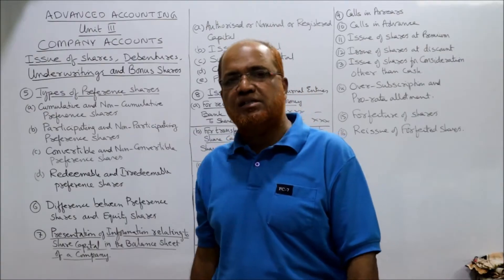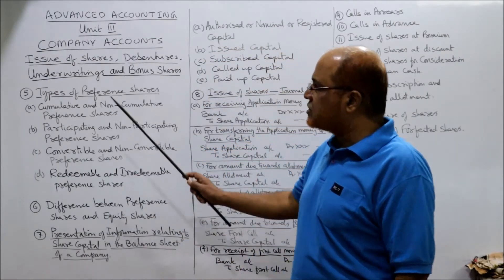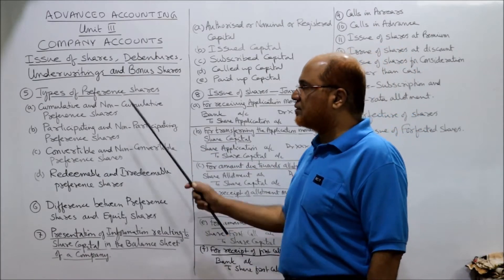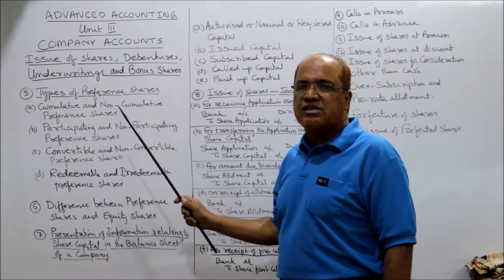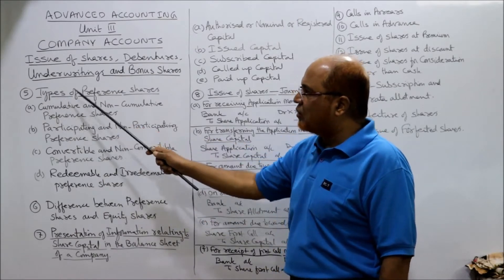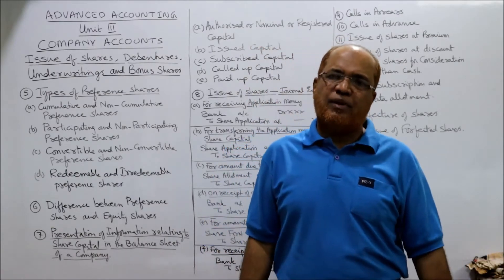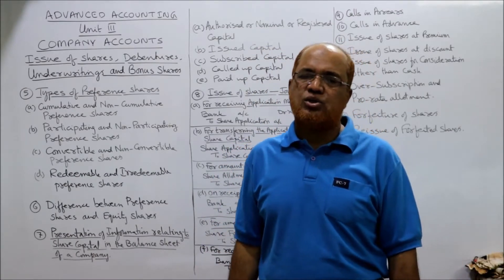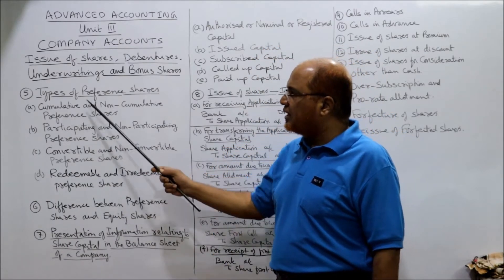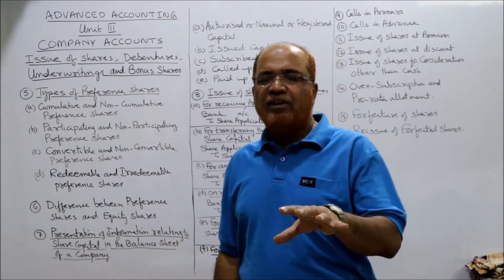In the previous session we covered four topics. Now in this session, the fifth topic is the types of preference shares. There are different types of preference shares which can be issued by a joint stock company, broadly classified into four types.